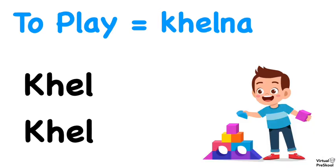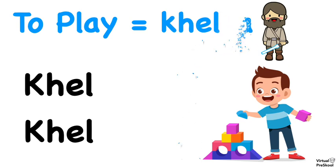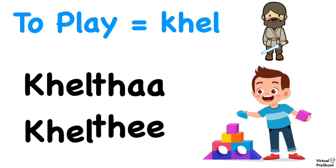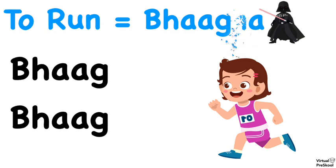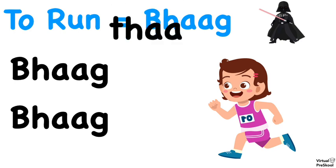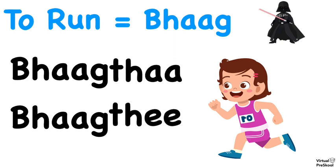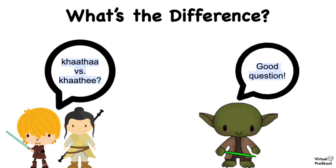Let's do another one. To play is keelna — use your lightsaber to chop off the na, and we're left with keel. So keel can become keelta or keelti. To run is bhaagna — use the lightsaber to chop off the na, and we're left with bhaag. So bhaag can become bhaagta or bhaagti. The question Luke and Ray, and that you should have too, is: if there are two new words, what's the difference? How do you know when to use each of these?